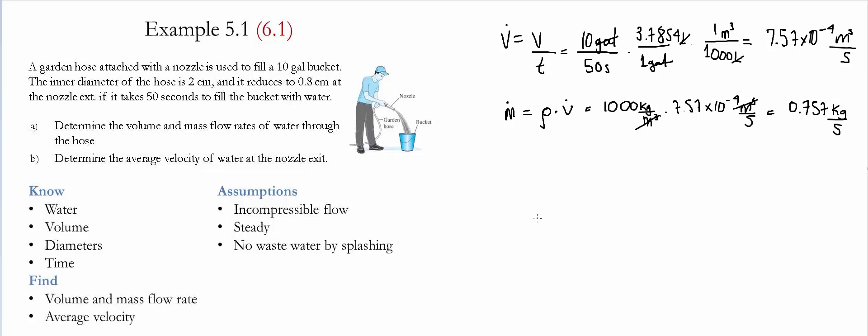The next step is to determine the average velocity at the exit of the nozzle. Volume flow rate is also defined as the velocity times the area at a particular point. We could define it as the velocity at the entrance times the area of the entrance, or the velocity at the exit times the area at the exit. Since we're looking for the velocity at the exit, the volume flow rate equals the velocity at the exit times the area at the exit. So the velocity is simply the volume flow rate divided by the area at the exit.